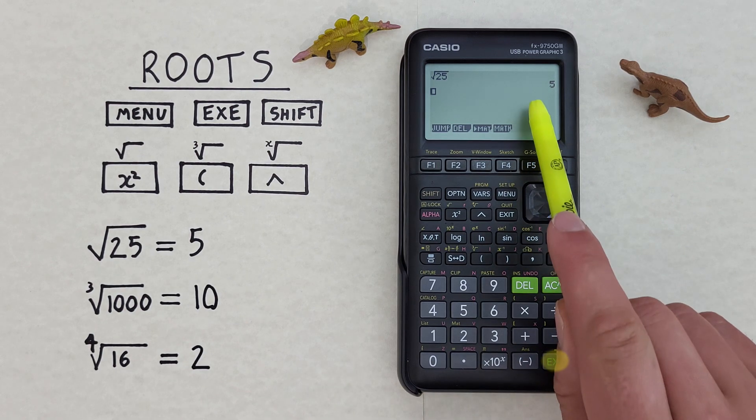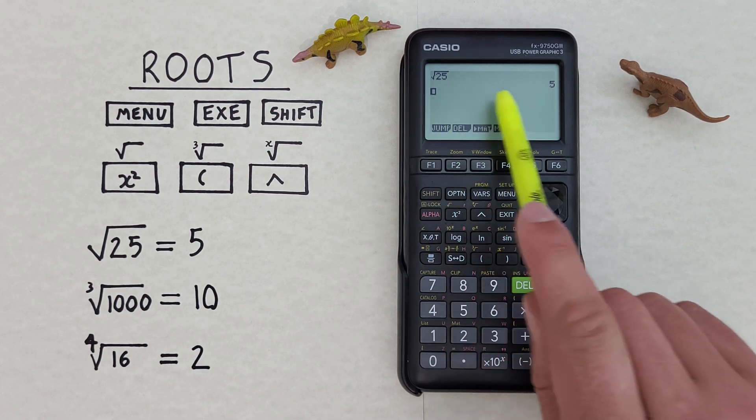And we get our result, which is 5. Square root of 25 is 5.